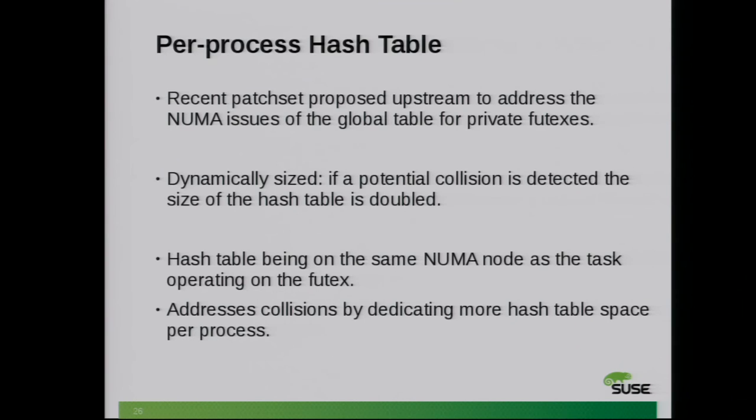To address the NUMA issue of remote accesses — which hash table size doesn't really affect — there's been some recent work on per-process hash tables. Instead of being globally allocated and shared, each process will have its own hash table that varies in size dynamically. If a collision is detected, it will double the size. This is really nice for NUMA because it makes all memory accesses local.